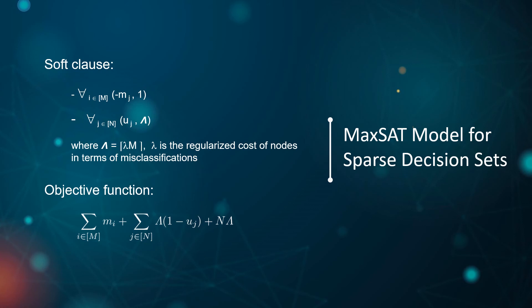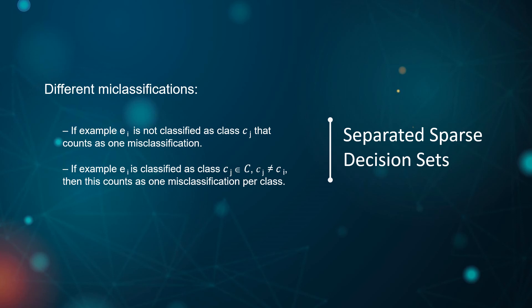We minimize the objective of number of misclassifications plus the size of the decision set in terms of nodes multiplied by a discount factor capital lambda, which requires that few misclassifications are worth the addition of one node to the decision set. Typically, we define capital lambda equal to the upper bound of small lambda multiplied by the number of examples, where small lambda is the regularized cost of nodes in terms of misclassifications. We can modify the definition of misclassifications to support a separated solution: if example e_i is not classified as class c_j, that counts as one misclassification; if example e_i is classified as class c_j and c_j is not equal to c_i, that counts as one misclassification per class. With this definition, we can compute optimal decision sets per class independently and join them together afterwards.